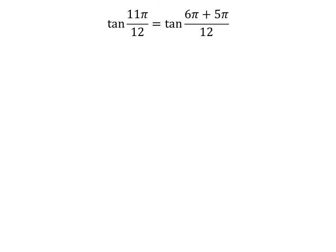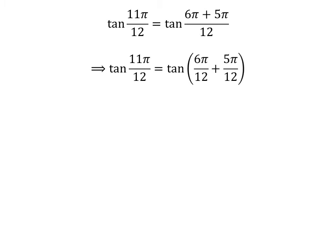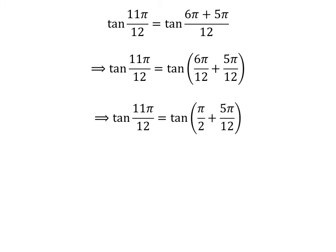11 times pi is equal to 6 times pi plus 5 times pi. So, tangent of 11 times pi upon 12 is equal to tangent of 6 times pi plus 5 times pi upon 12. The fraction can be written as sum of two fractions: tangent of 11 times pi upon 12 is equal to tangent of 6 times pi upon 12 plus 5 times pi upon 12. Cancelling out the common factor in the numerator and the denominator gives us tangent of 11 times pi upon 12 is equal to tangent of pi upon 2 plus 5 times pi upon 12.